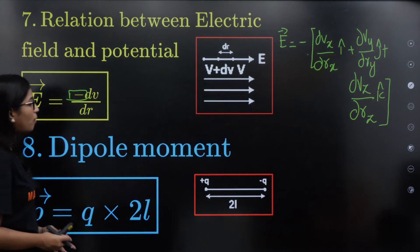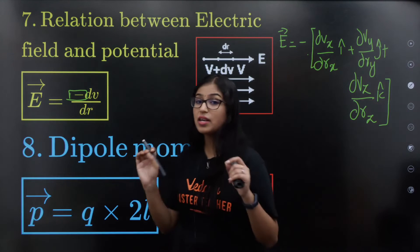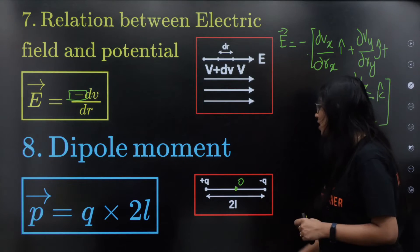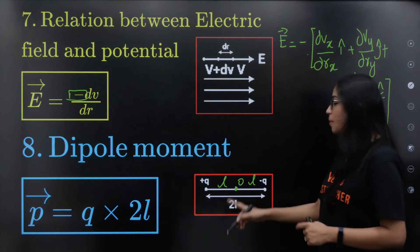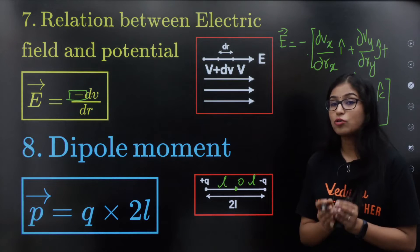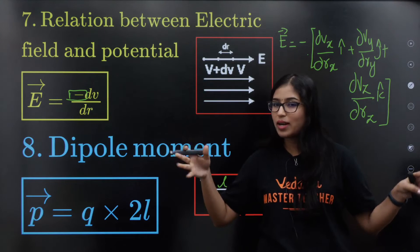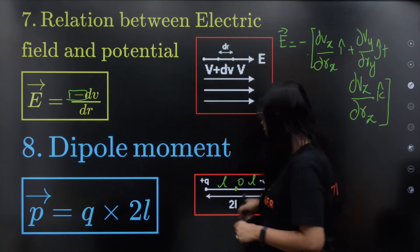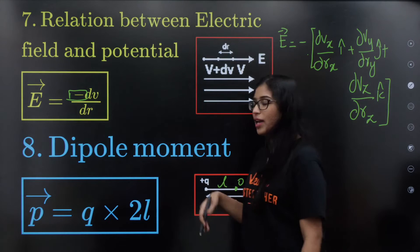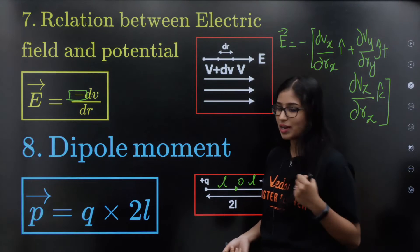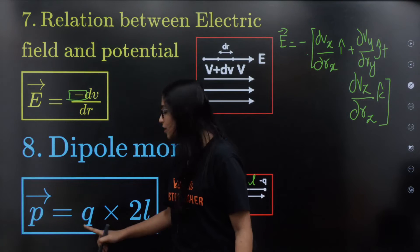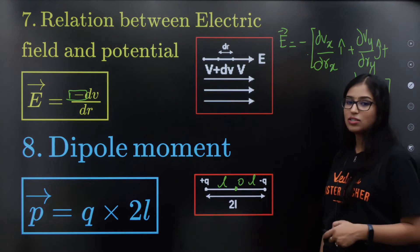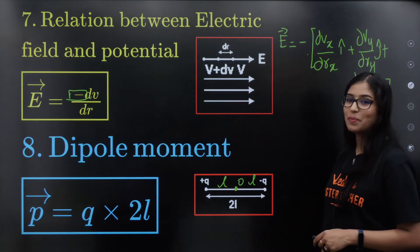Dipole moment: a dipole has two equal and opposite charges separated by a particular distance 2L — L and L on each side. The dipole moment P equals Q into 2L. Q is the charge and 2L is the length of separation.